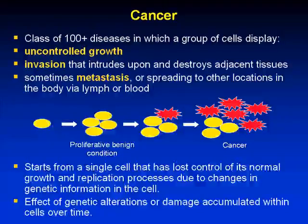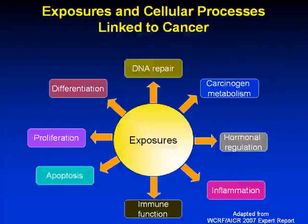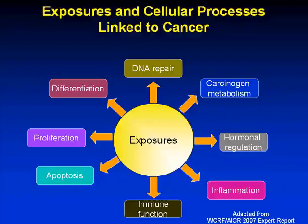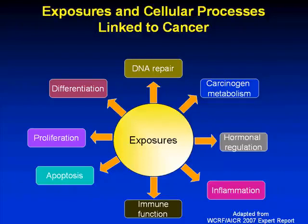In the context of cellular processes important with regards to cancer, when we think about exposures in their totality — particularly in the context of nutrition, which is a very complex exposure and diet — we can identify an impact of these various constituents on all of these different processes, whether they be at the cellular level from the standpoint of effects on proliferation and apoptosis, cellular differentiation, or immune function.